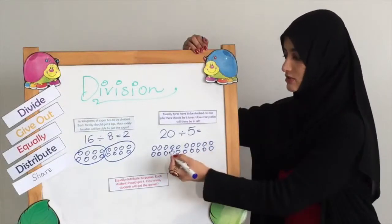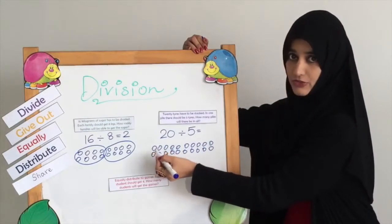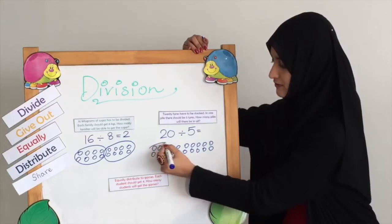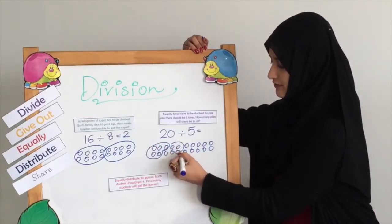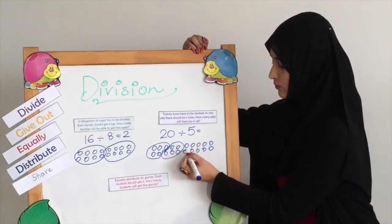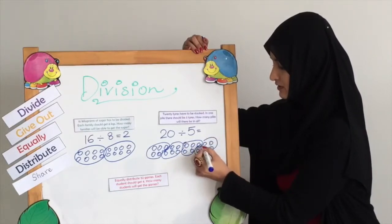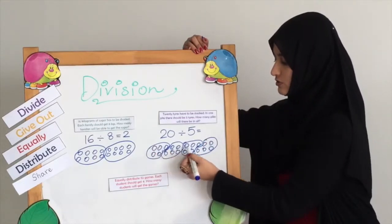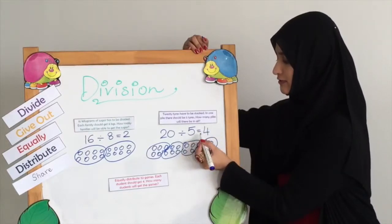These are the 20 tires. We are going to count 5 tires and make a pile — make a set. We count groups of 5 four times, making four piles. Now we check how many piles we have: 1, 2, 3, 4. 20 divided by 5 equals 4.